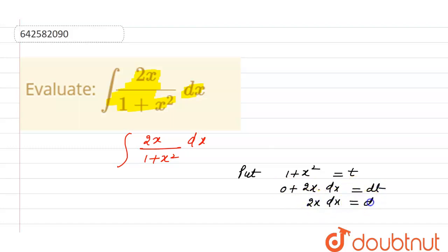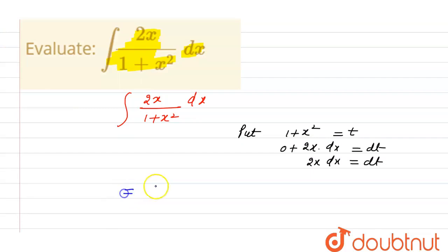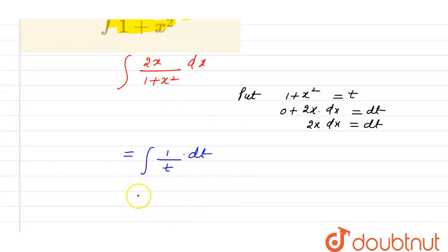Now we can write 2x dx = dt. So our integral becomes ∫(1/t) dt. The integration of 1/t is equal to log|t| + C, because the differentiation of t is available in the numerator.